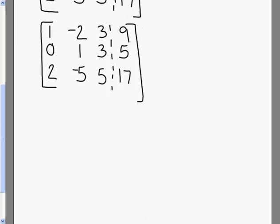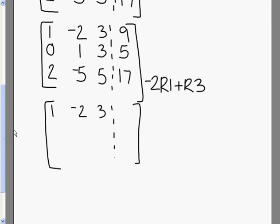Now since we have the 1 and the 0 in our first column, we want to get that 2 to also be a 0. So I'm going to use the first row, I'm going to multiply it by negative 2, and add it to row 3. Negative 2 row 1 plus row 3. Now what that's going to do for me, I'm going to be keeping my first two rows to be the same. So I'll rewrite the first two rows there. And my last row now is going to become 0, negative 1, negative 1, negative 1.